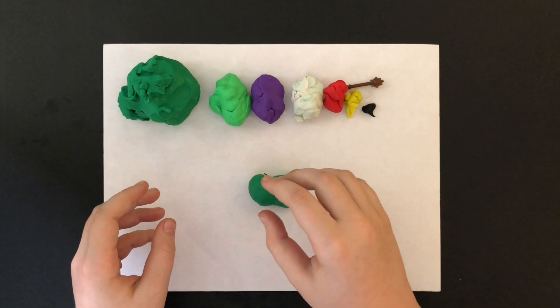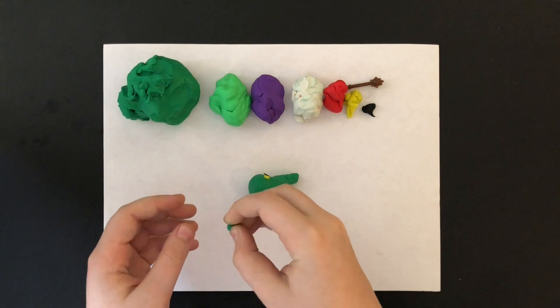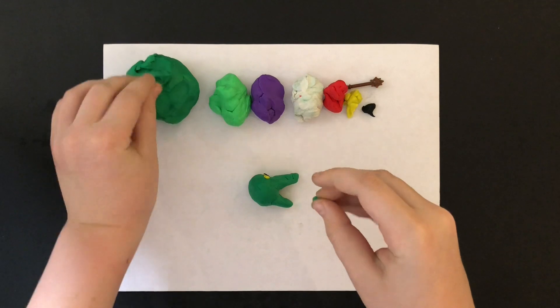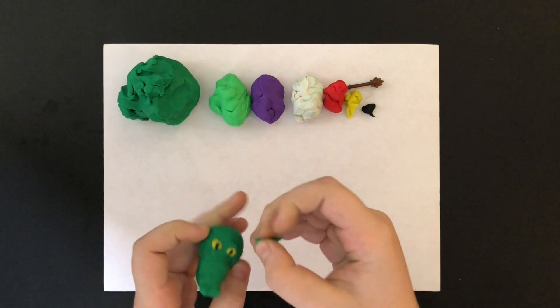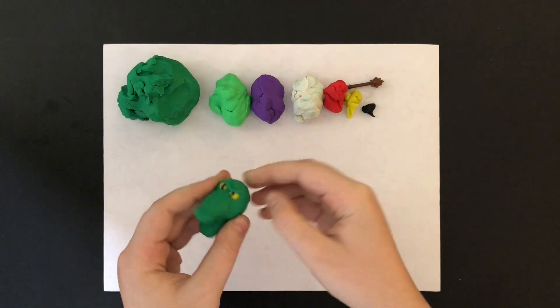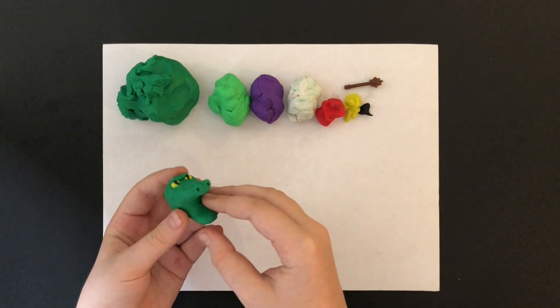The next step is the dragon's eyebrows. I take a small piece of green, and roll it into a small line, and attach it on top of his eyes. I'm making him look fierce.